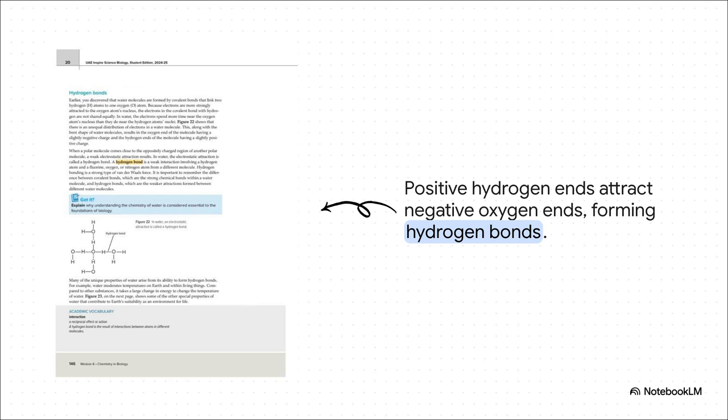And this is where it all comes together. That slightly positive hydrogen end of one water molecule is just irresistibly drawn to the negative oxygen end of its neighbor. That connection right there is a hydrogen bond. And it's these bonds that link trillions of individual H2O molecules into the dynamic, interconnected liquid that we know as water.